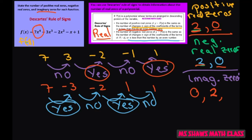Also, if you have 0 positives and 0 negatives, then that would mean you have 4 imaginary zeros.